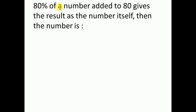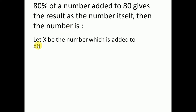The first problem: 80% of a number added to 80 gives the result as the number itself. Then what is the number? Let x be that number. 80% of x is equal to 0.8x — percentages ki jagah par aap ne 1 divided by 100 likhna hai, and 'of x' means multiply by x. So 80 divided by 100 multiplied by x is equal to 0.8x.